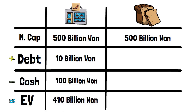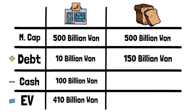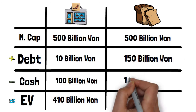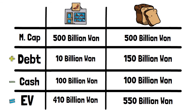On the other hand, Big Hot Bread has taken out a lot of debt in recent years to finance their world domination plans, coming to an amount of 150 billion won in debt, and their cash reserves only count for about 100 billion won at present. This makes their enterprise value 550 billion won. When we compare them side by side, we can see that Shumart is much less expensive than BHB at the current time.